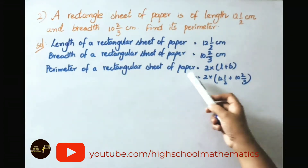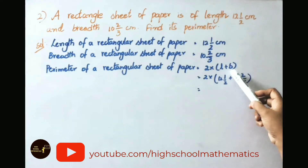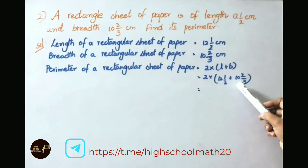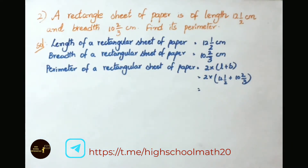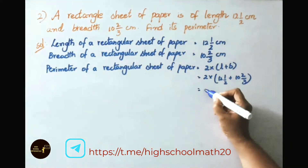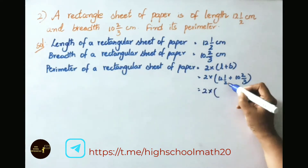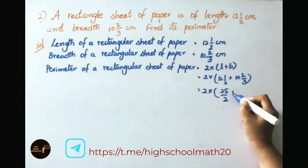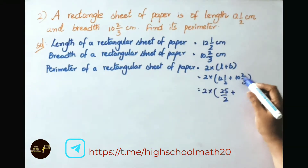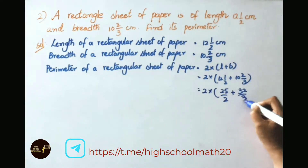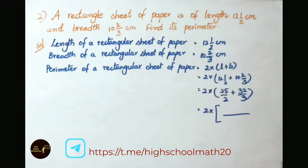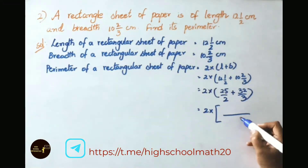Perimeter of a rectangle equals 2 times the quantity length plus breadth. That equals 2 times the quantity 12 and 1 by 2 plus 10 and 2 by 3. Now let us convert these mixed fractions to improper fractions: 2 times 12 plus 1 is 25 by 2, and 3 times 10 plus 2 is 32 by 3. Now let us find the LCM of 2 and 3, which is 6.